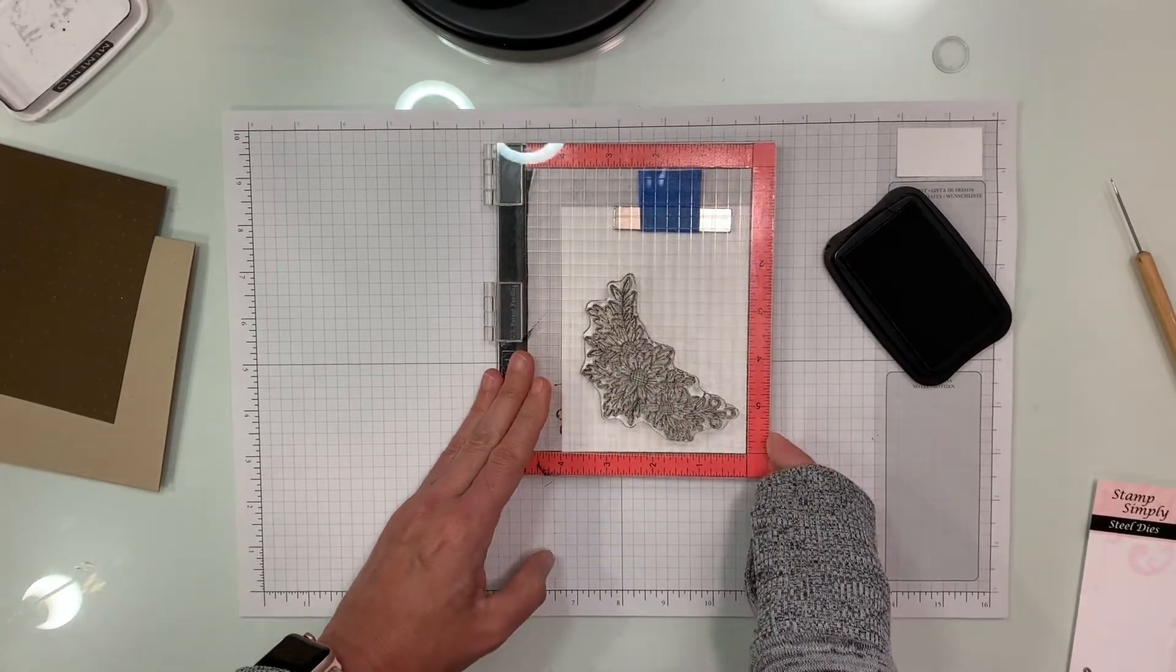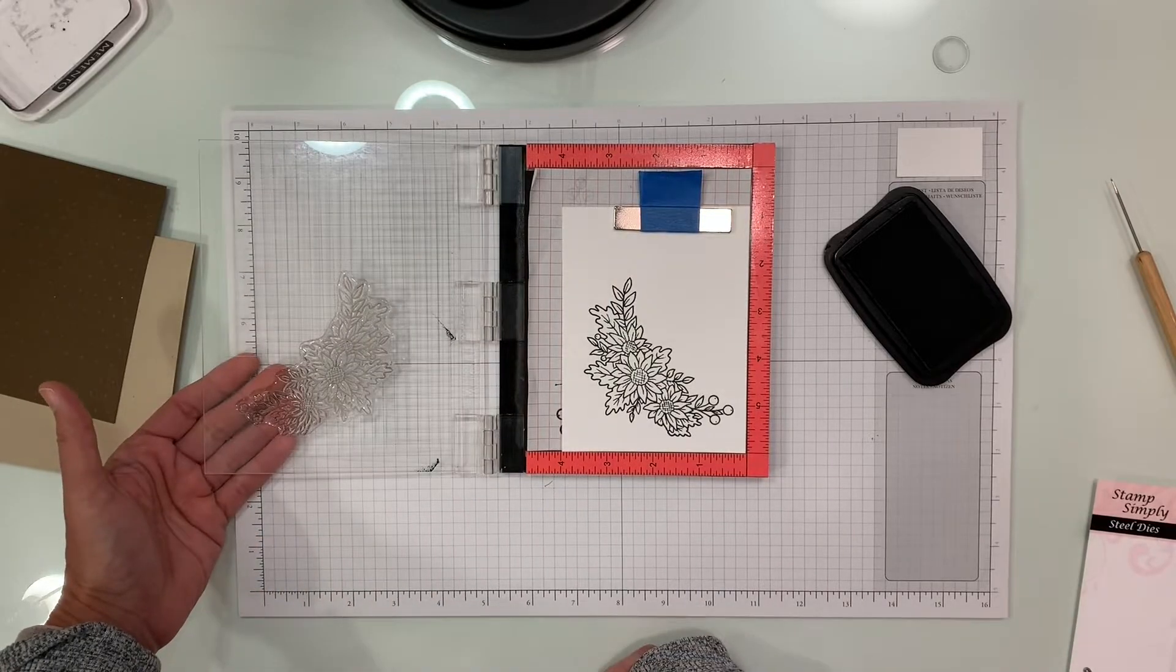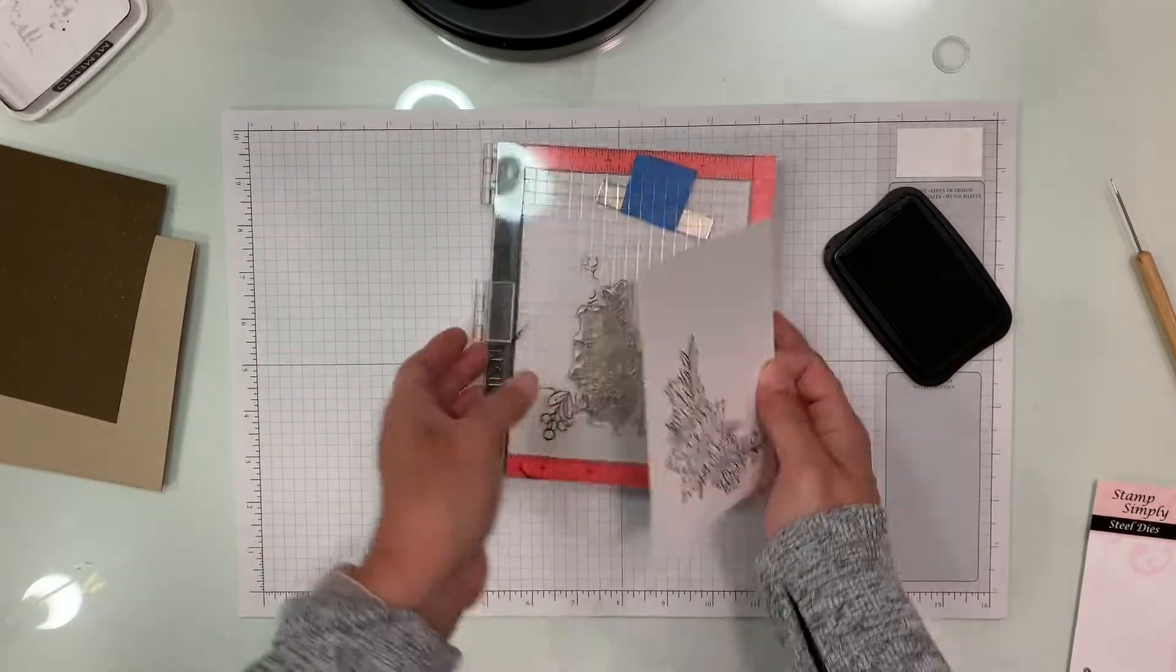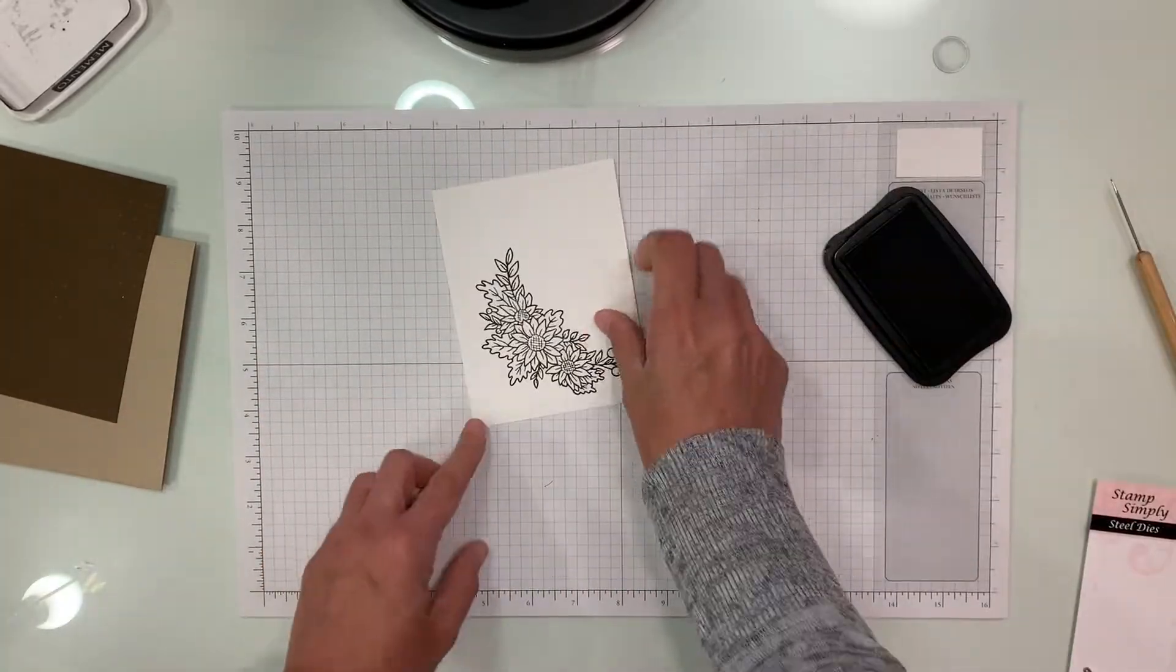So now we're going to go ahead and die cut this. We're going to take this out and I'm going to put my die cutting right here on the table.